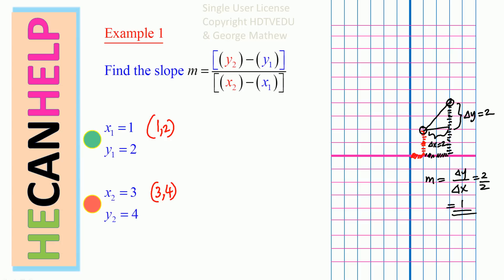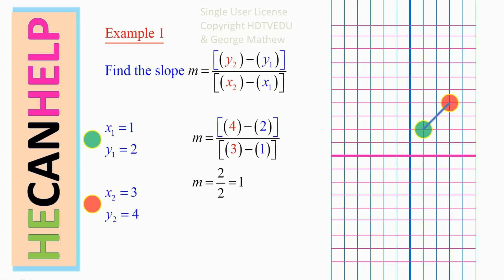Let's apply the formula and verify. Slope is y2 minus y1 over x2 minus x1 — that is 4 minus 2 over 3 minus 1, which is 2 over 2, and that is 1. Slope is 1. Here is our point x1, y1, and here is our point x2, y2. Join those points — you have the rise (delta y = 2) and the run (delta x = 2), so 2 over 2 equals 1.